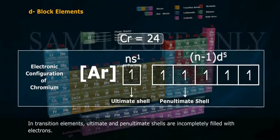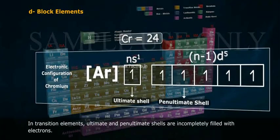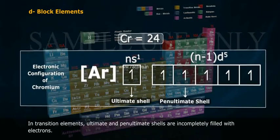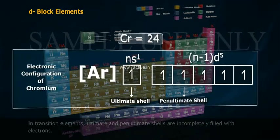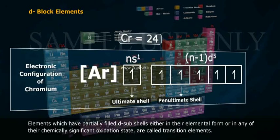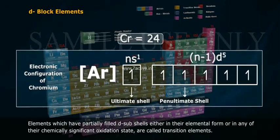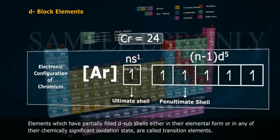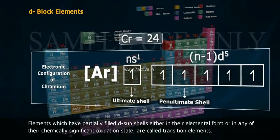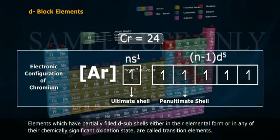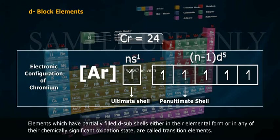In transition elements, ultimate and penultimate shells are incompletely filled with electrons. Elements which have partially filled d sub-shells, either in their elemental form or in any of their chemically significant oxidation state, are called transition elements.